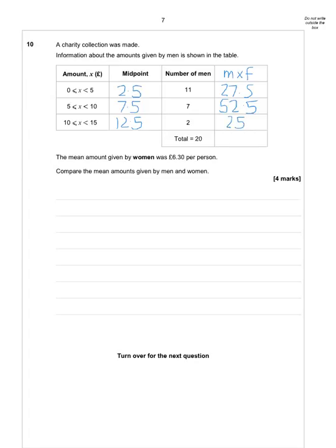Then I add together that column. When I add them together, I get a total of 105. So what I'm saying there, it is an estimate. I'm saying that these men, these 20 men, collectively spent £105.